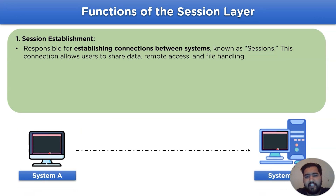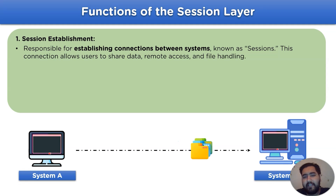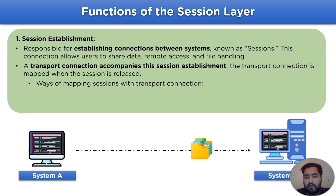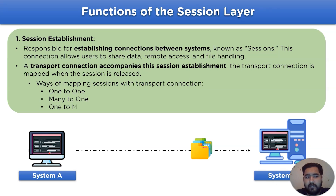Session establishment is responsible for establishing connections between systems, also known as sessions. This connection allows users to share data, remote access, and file handling in a communication channel. It acts as a transport connection that is accompanied in the session establishment — that is, the transport connection is mapped when the session is released. Through this connection, there are three ways of transport connection: one-to-one, many-to-one, and one-to-many.